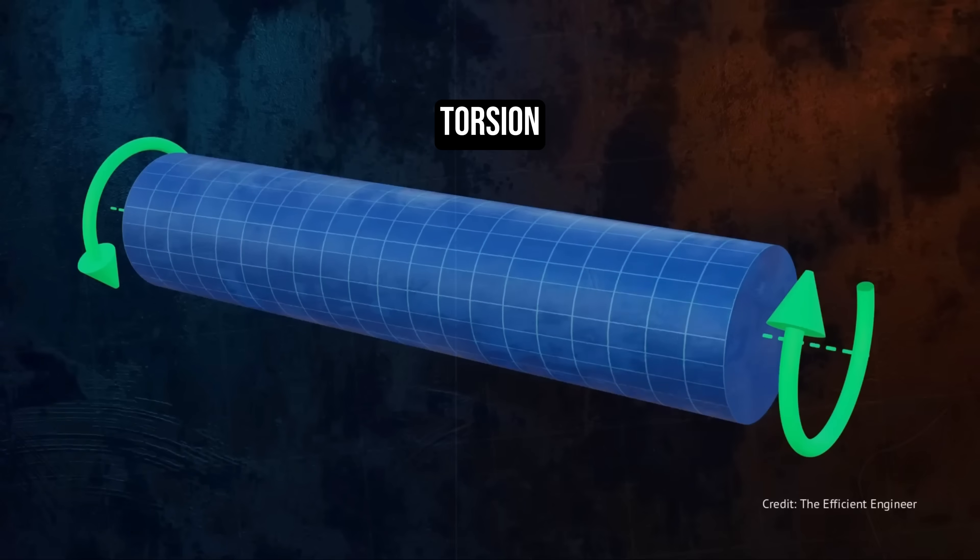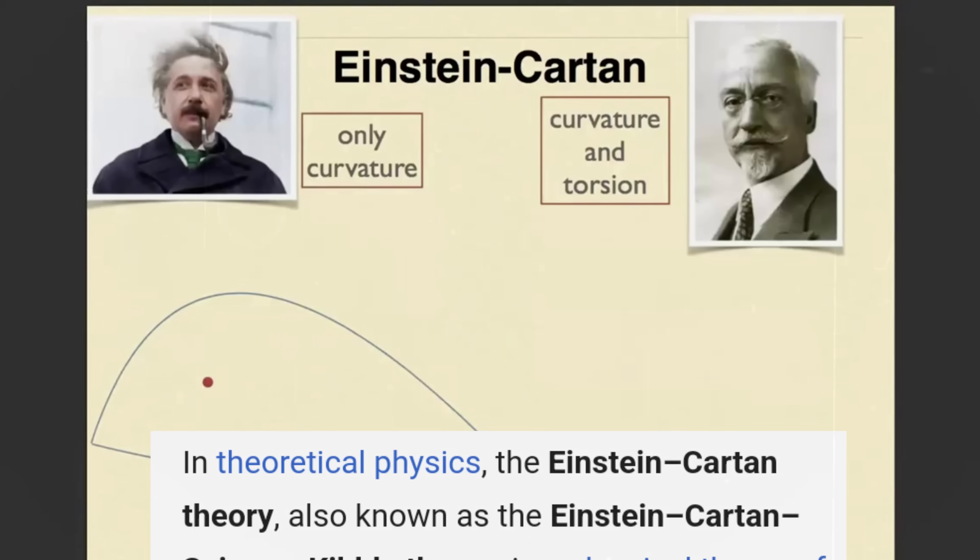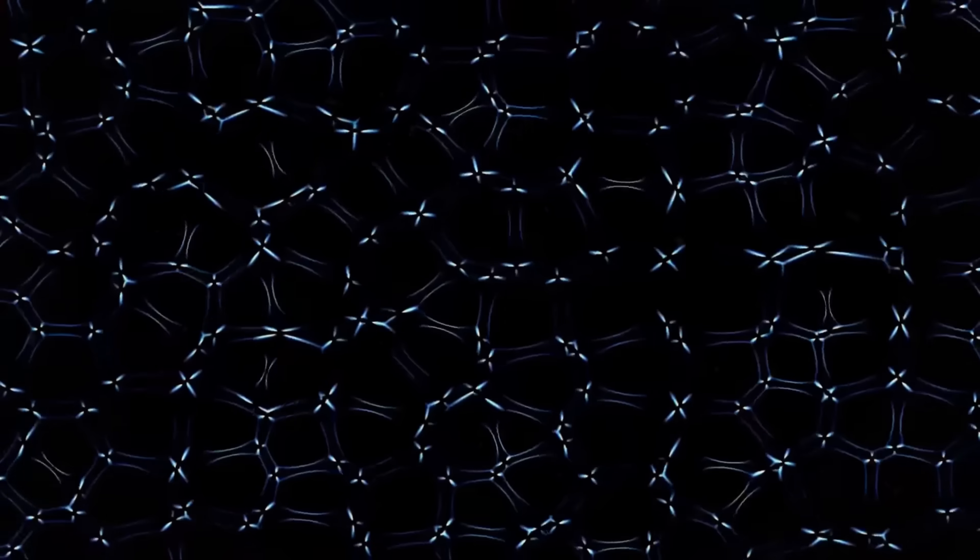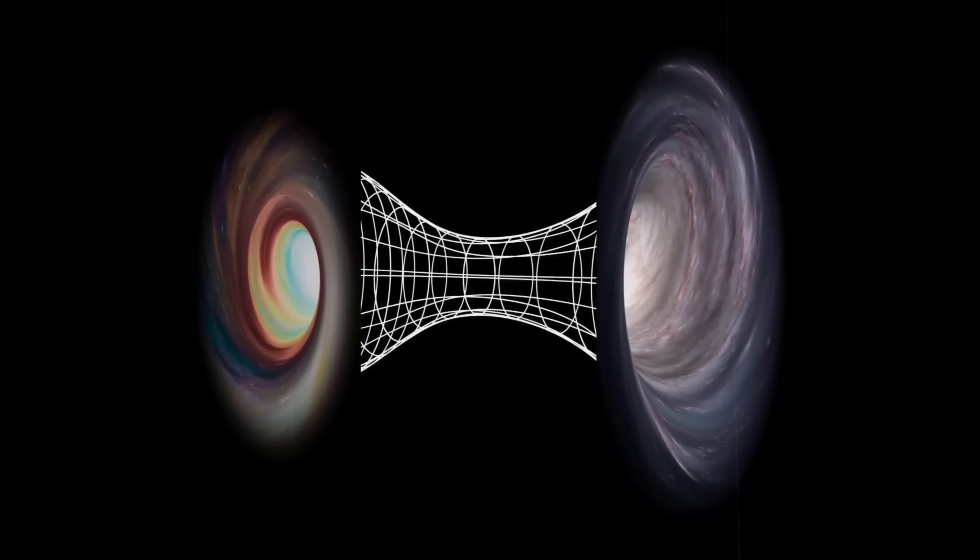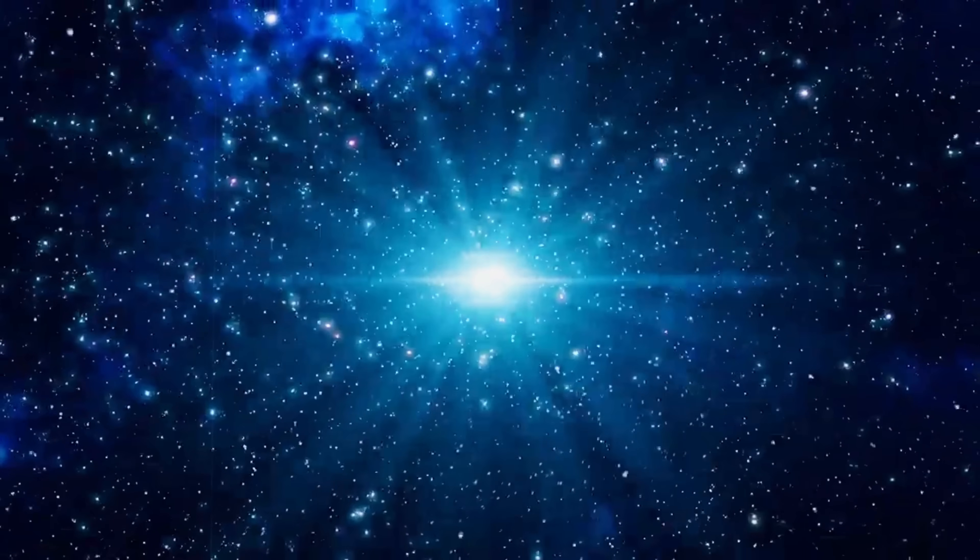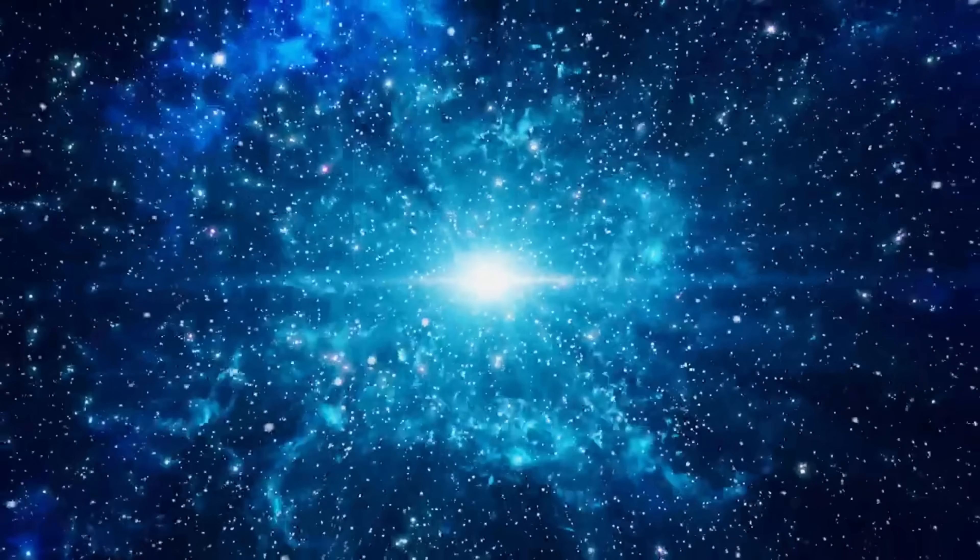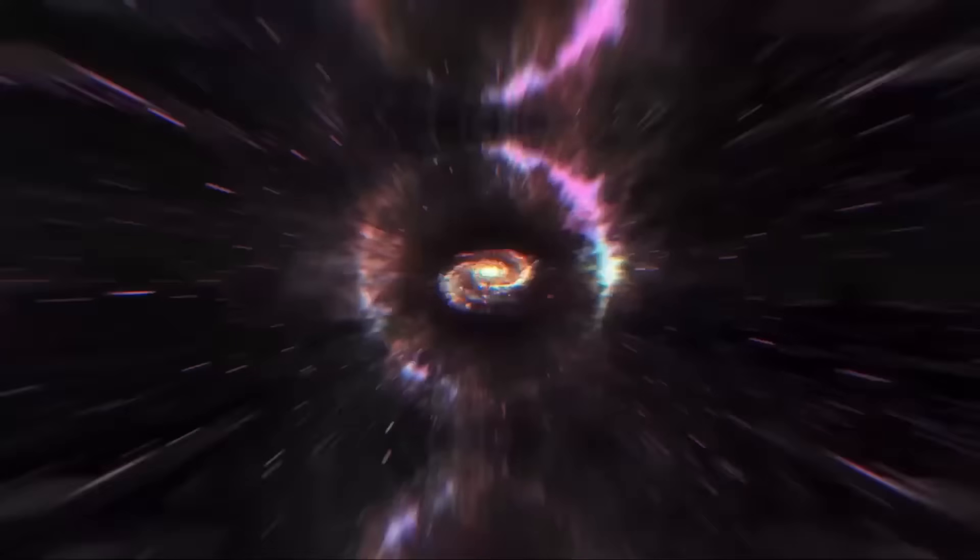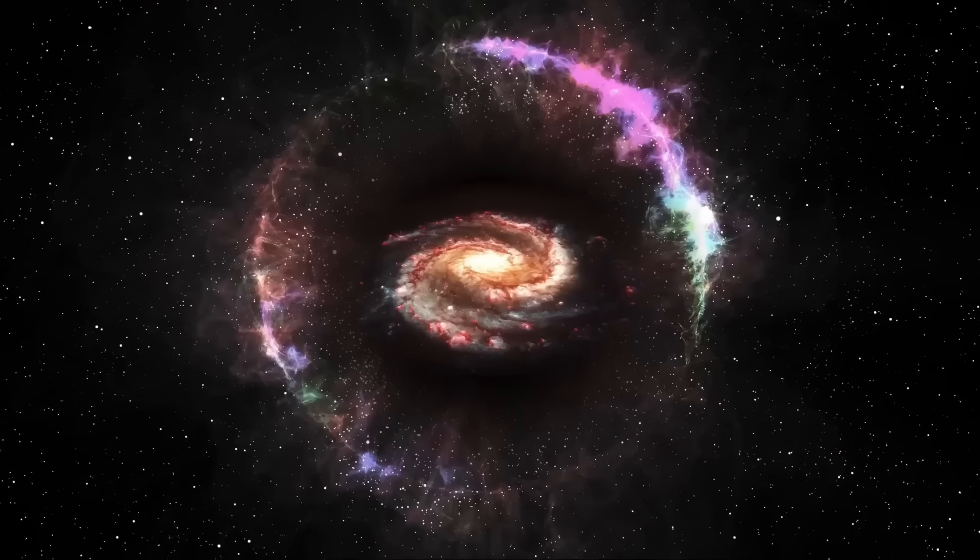But there's more. Torsion, a concept from Einstein-Cartan relativity, could play a crucial role in this cosmic puzzle. Torsion refers to a twisting effect in space-time caused by the intrinsic spin of particles, and some theories propose that it could generate a repulsive force at extreme densities. This force might prevent black holes from collapsing into true singularities, instead triggering what's known as a big bounce, a dramatic rebound that could lead to the formation of a new universe inside the black hole's event horizon.